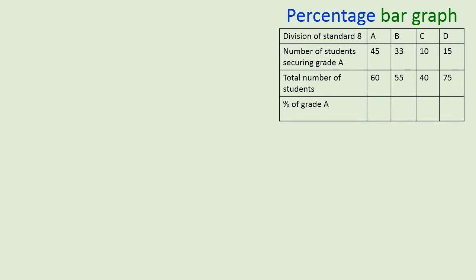Here are the numbers given to us on the screen. Division of standard 8: A, B, C, and D. Number of students securing A grade is 45, 33, 10, and 15.